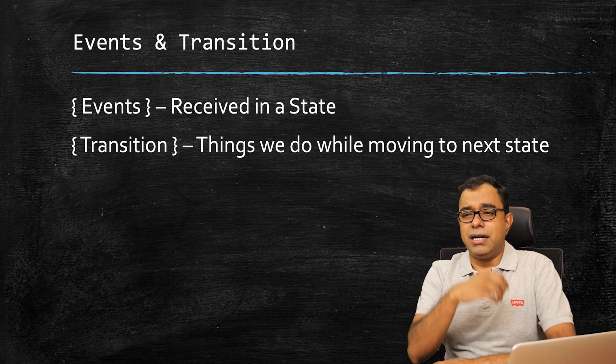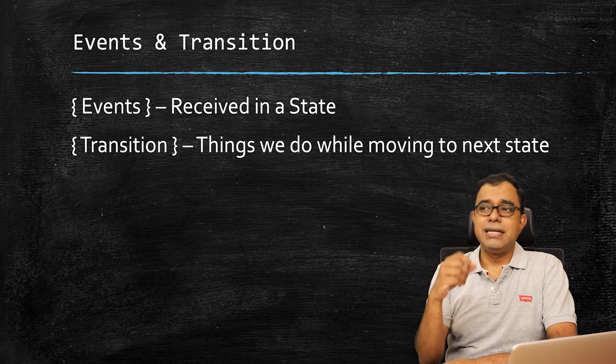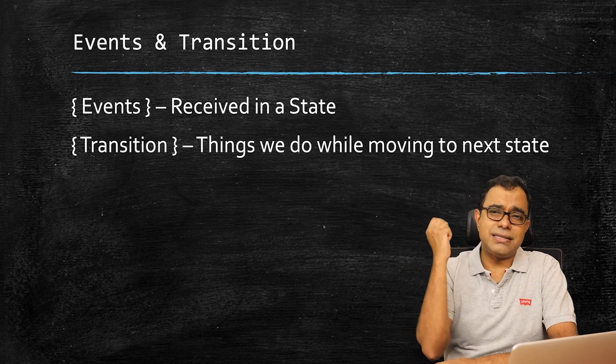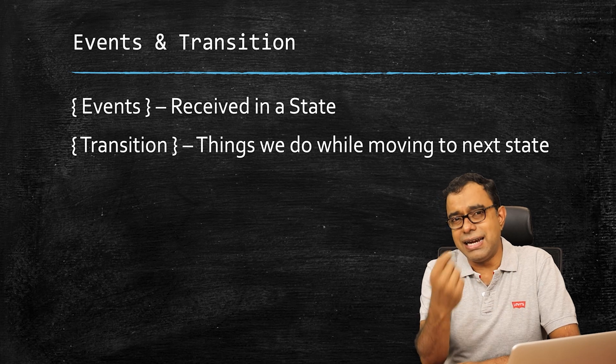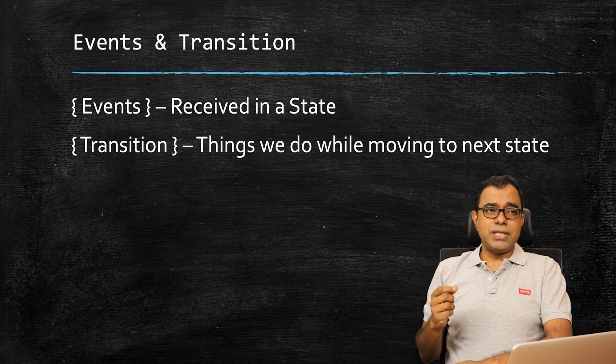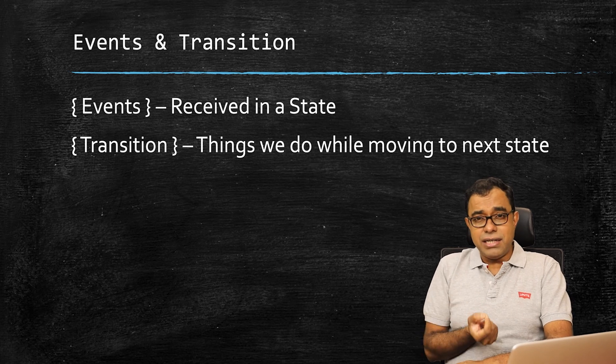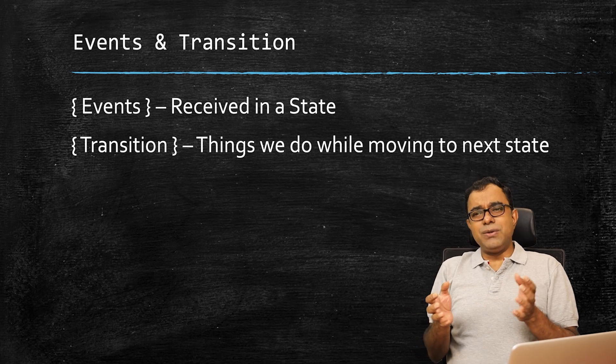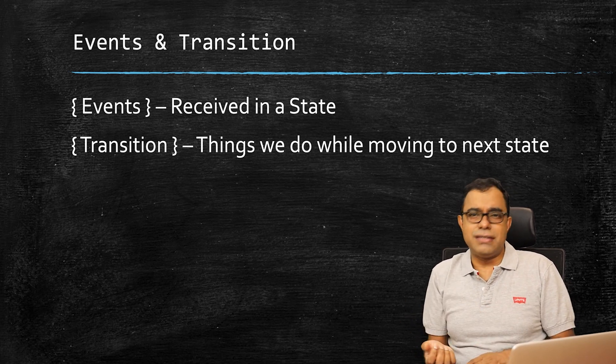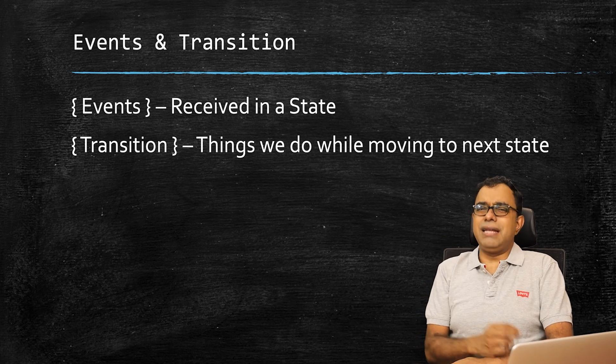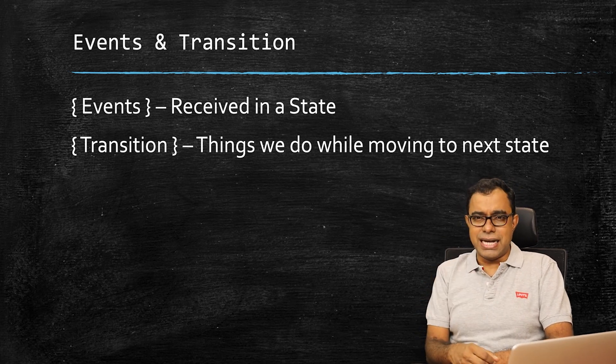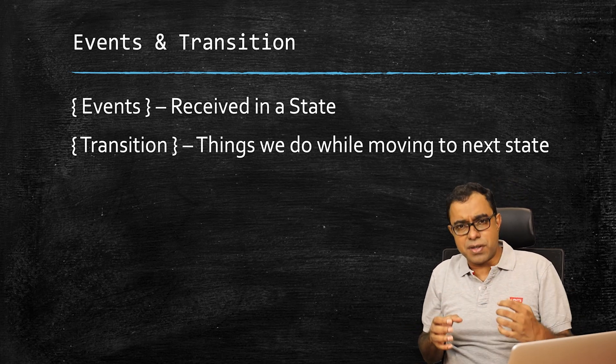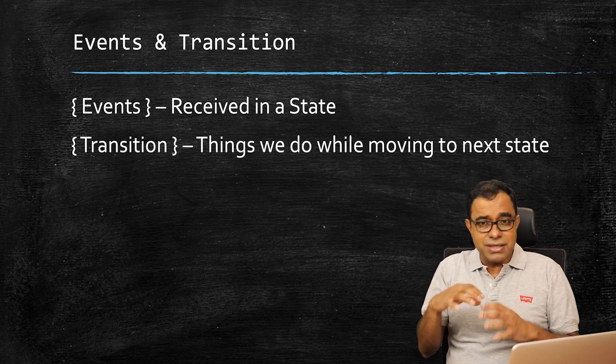So events trigger some reaction in the state, as a result of which I may move to a different state. Which means that events are the things which we receive in the state. Transitions are the things which we do while moving to the next state. So let's assume that I am talking to a group of people or I am with my friends, and I have given an exam and I am expecting a result. Let's assume that I received a result which is not what I had expected. Of course, this is an event which is being triggered to me, but I will not become sad instantaneously. Obviously, I do not want to be sad in front of my friends, so I may come home, go to my room, and then maybe become sad.